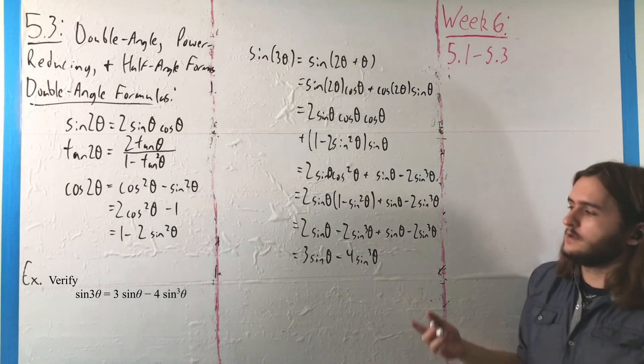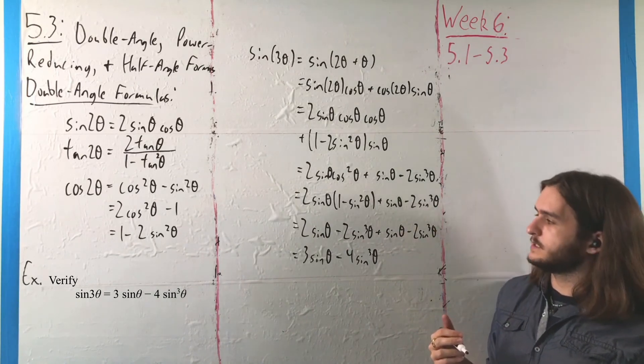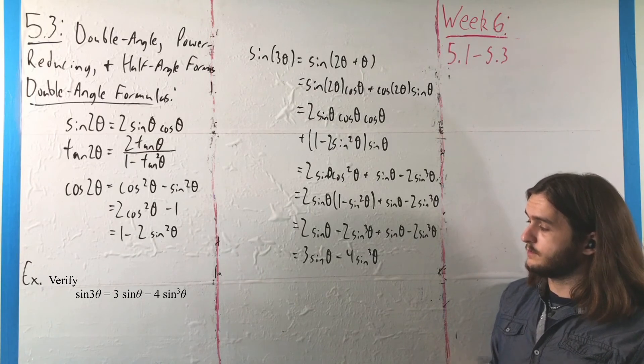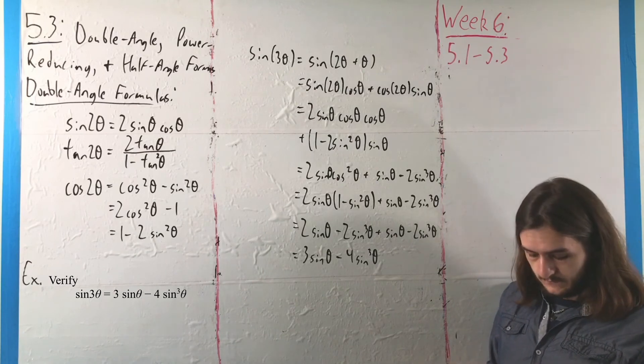And as improbably and convolutedly as our route was to get there, you have what we're looking for: 3 sine of theta minus 4 sine cubed.